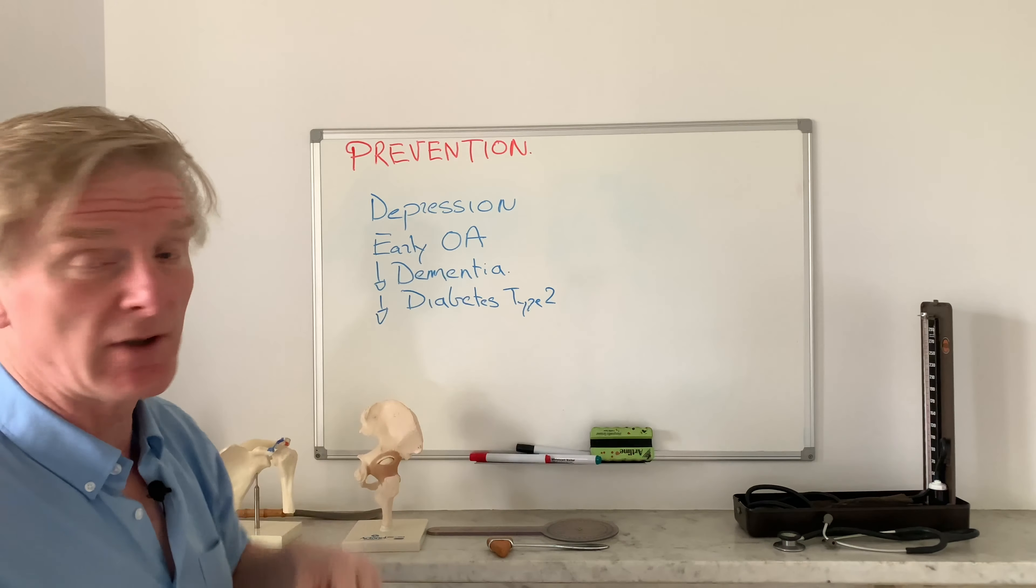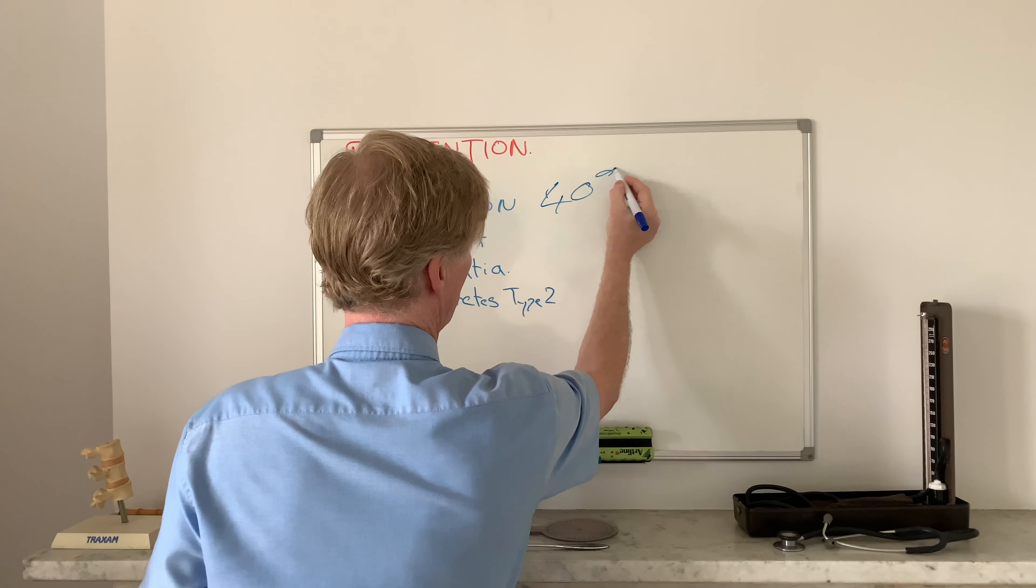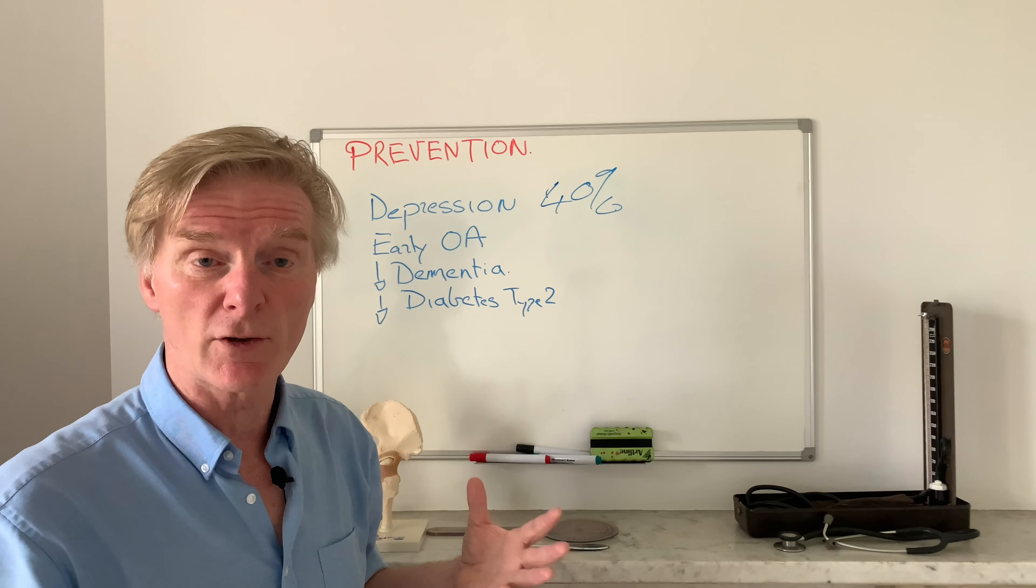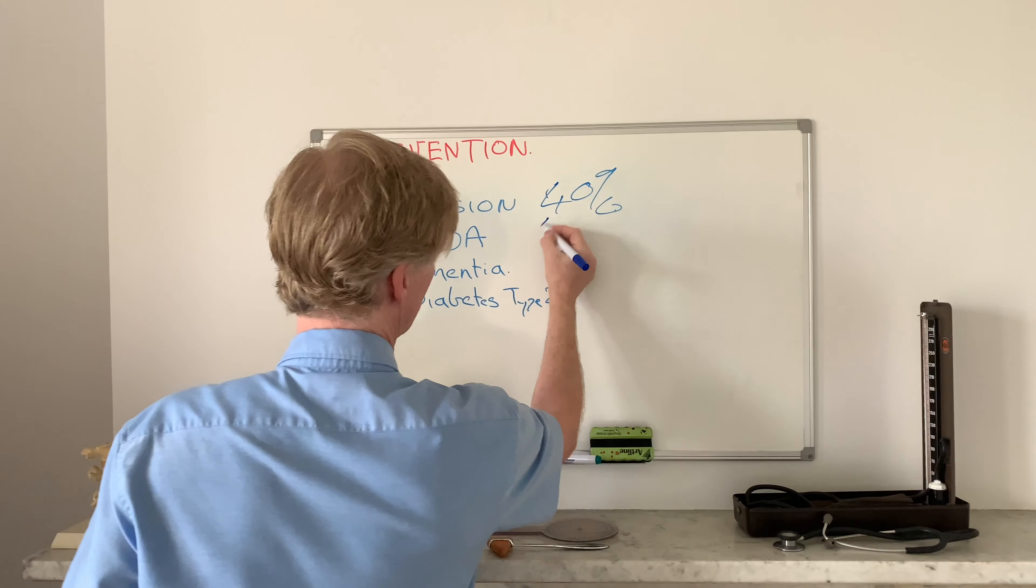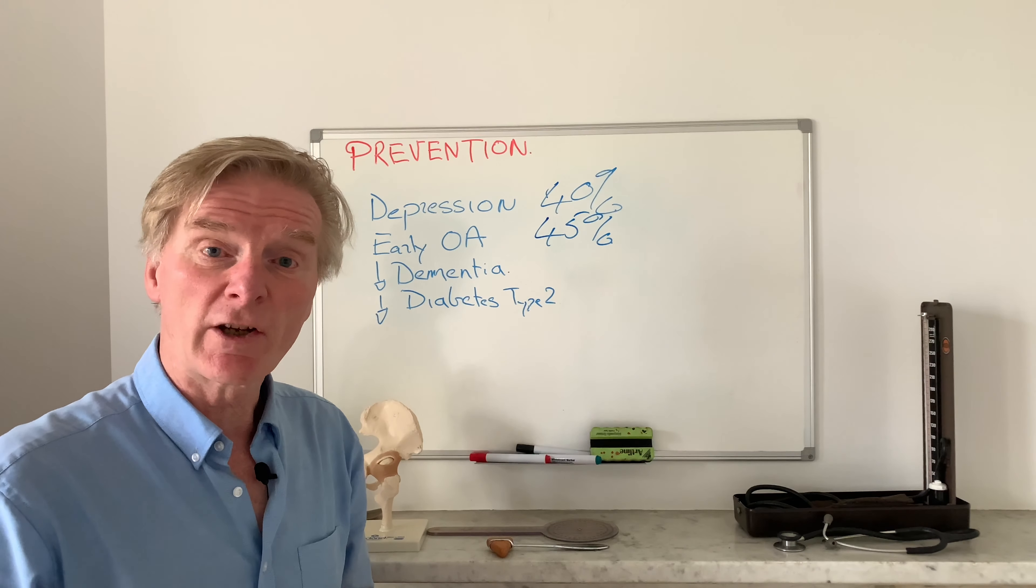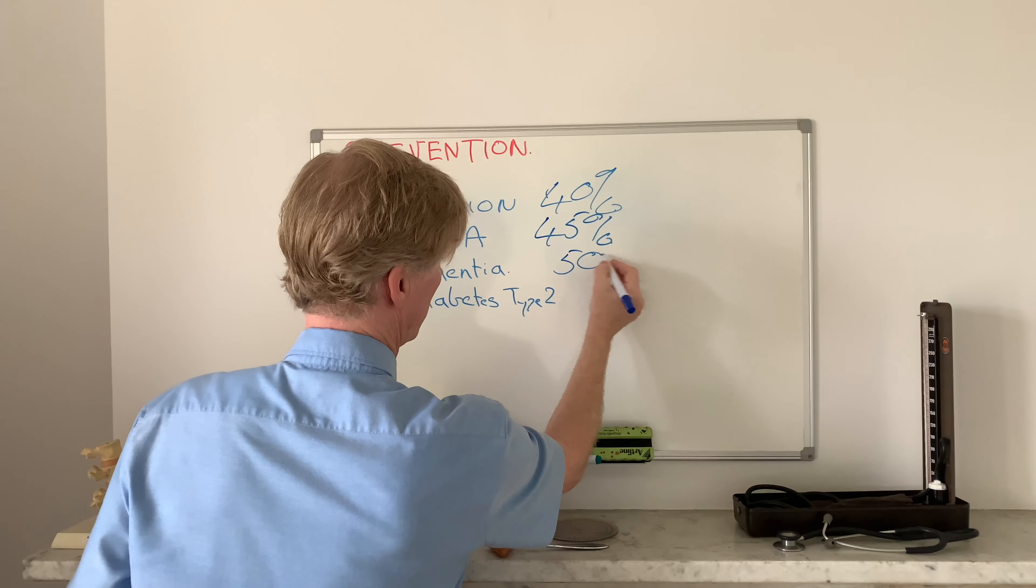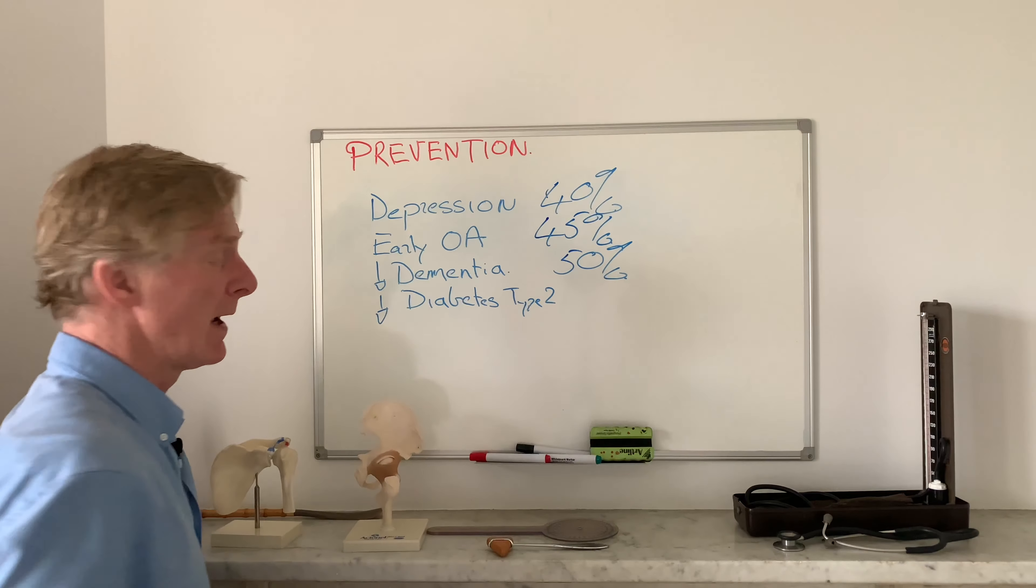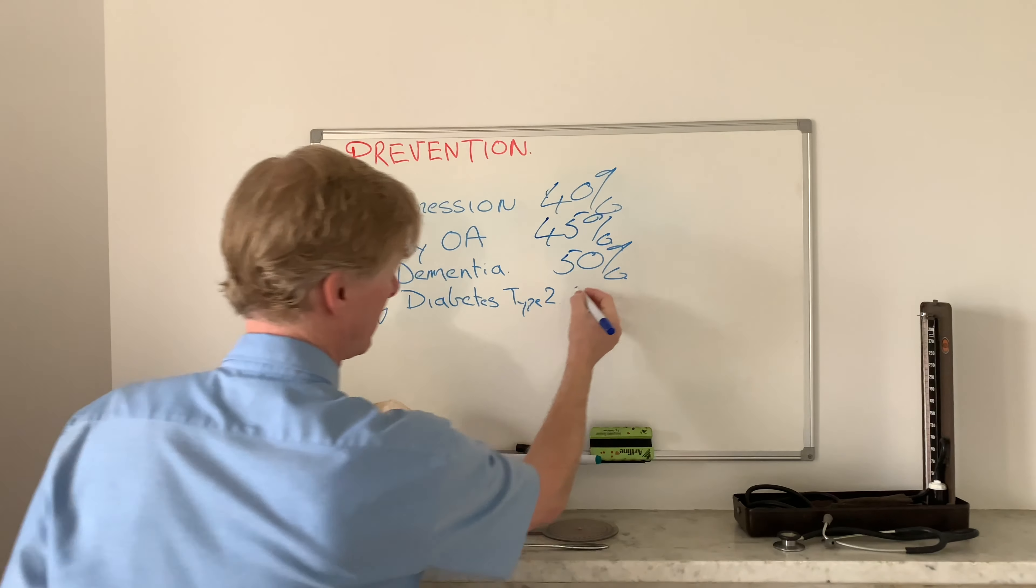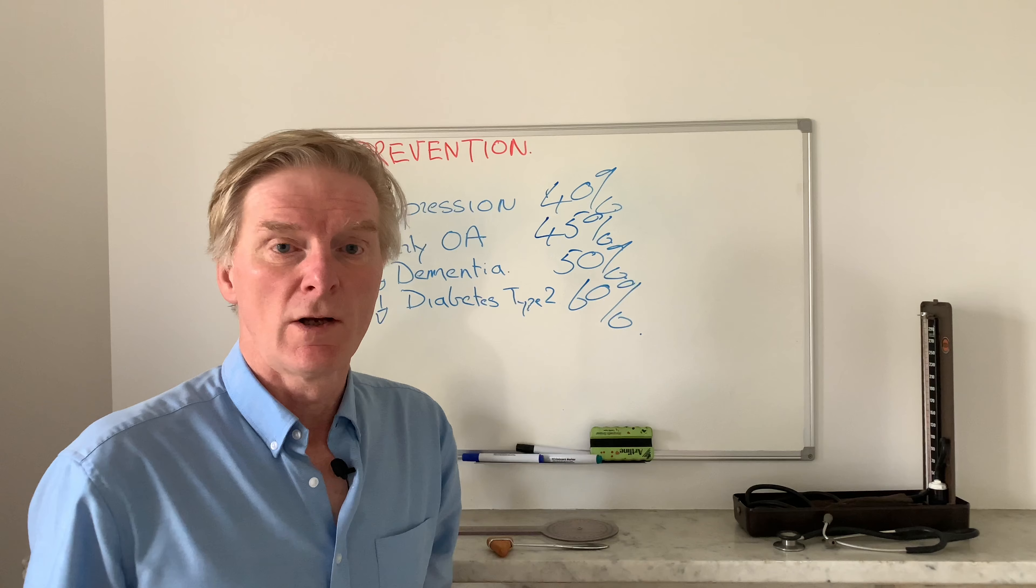Can we lessen the effect of depression by about 40%? Reduce the likelihood of early onset osteoarthritis by 45%? Decrease the likelihood of early dementia by 50% and slow down the progression of type 2 diabetes by 60%?